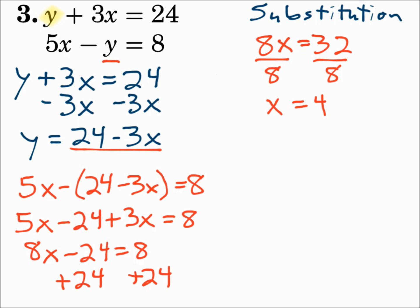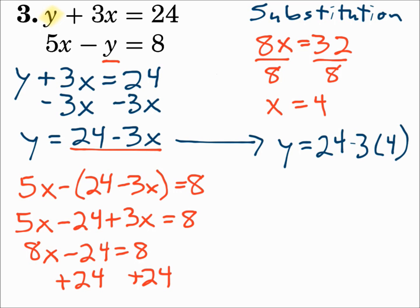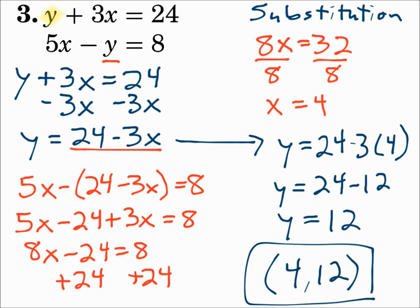Now substitute 4 in for x in the equation we solved for y: y equals 24 minus 3x, so y equals 24 minus 12. Y is 12. Your final answer is (4, 12). Since we had a variable with a coefficient of 1, we could solve that with substitution.